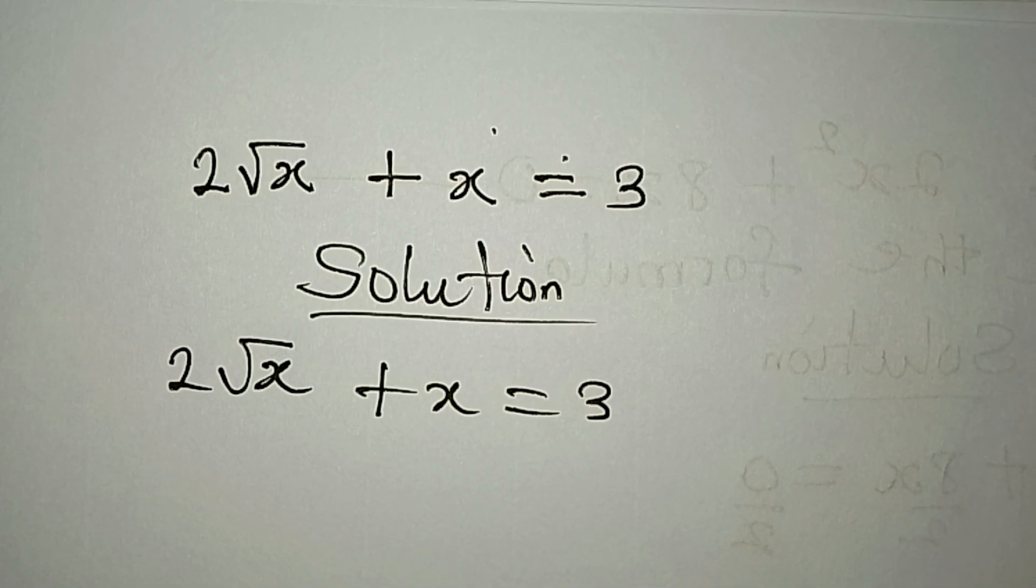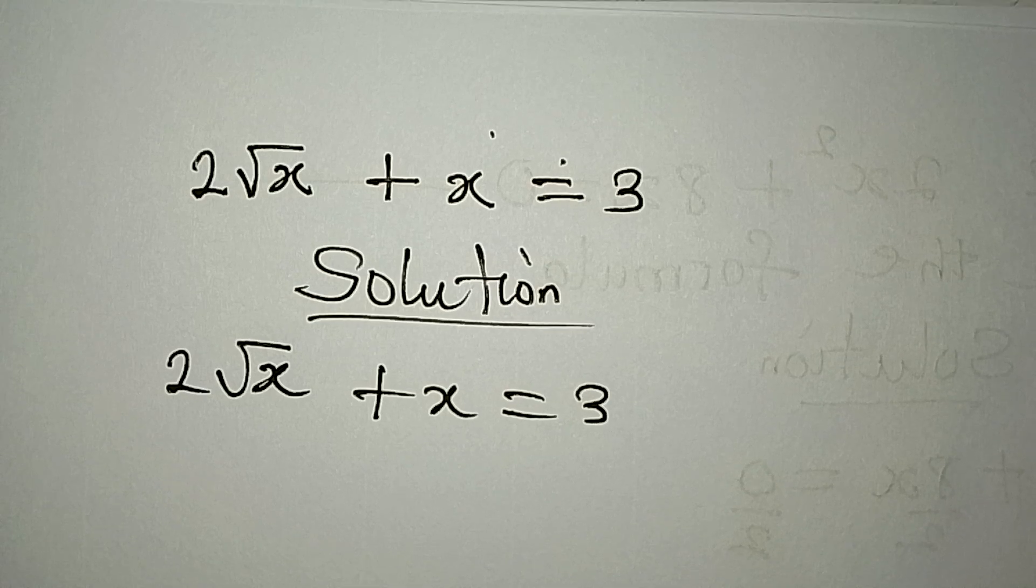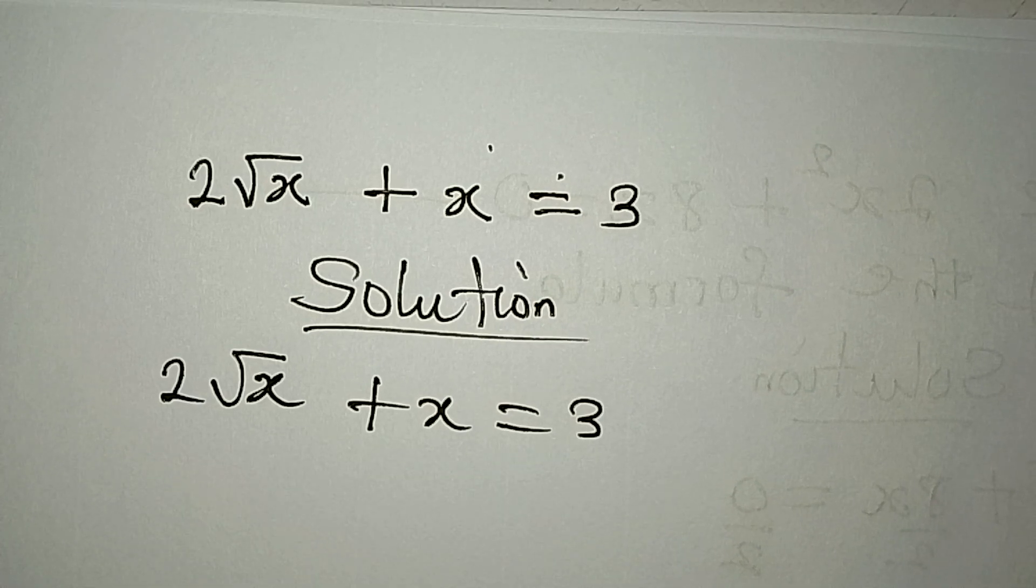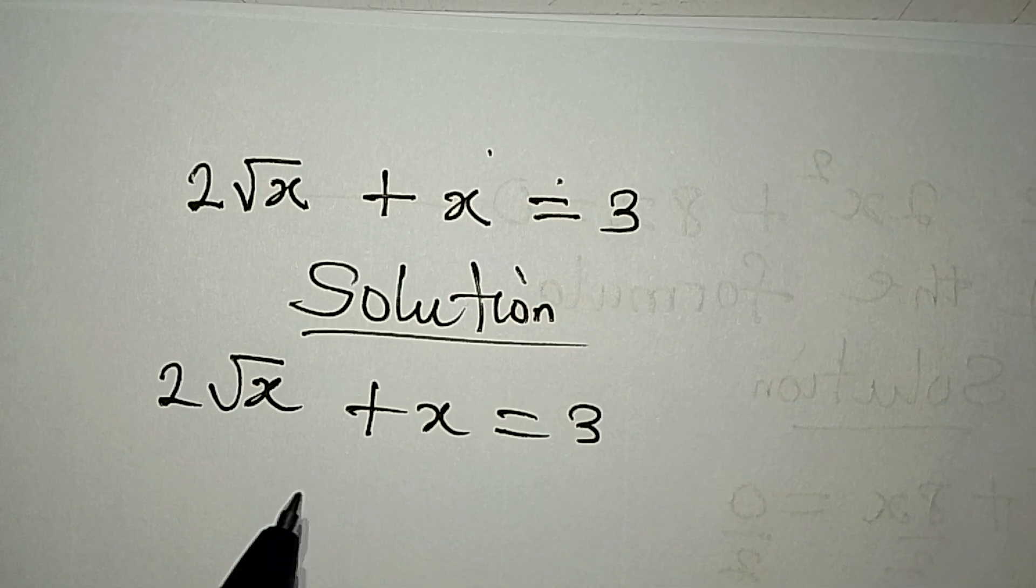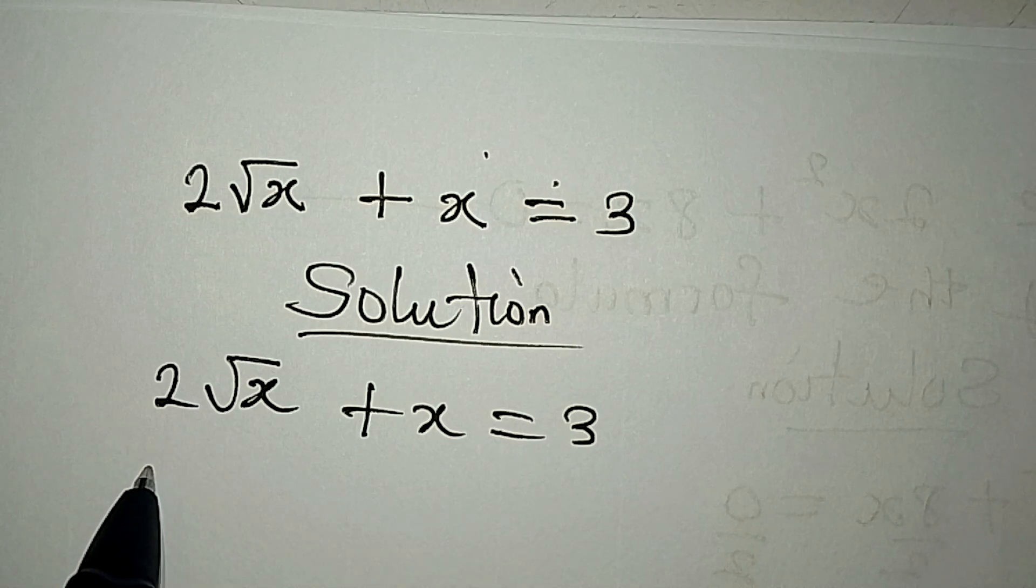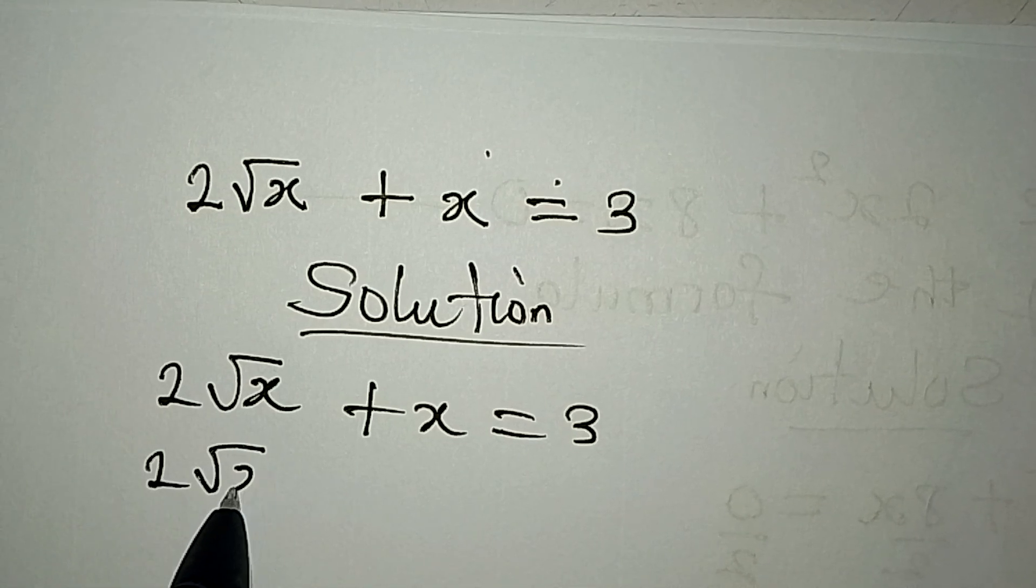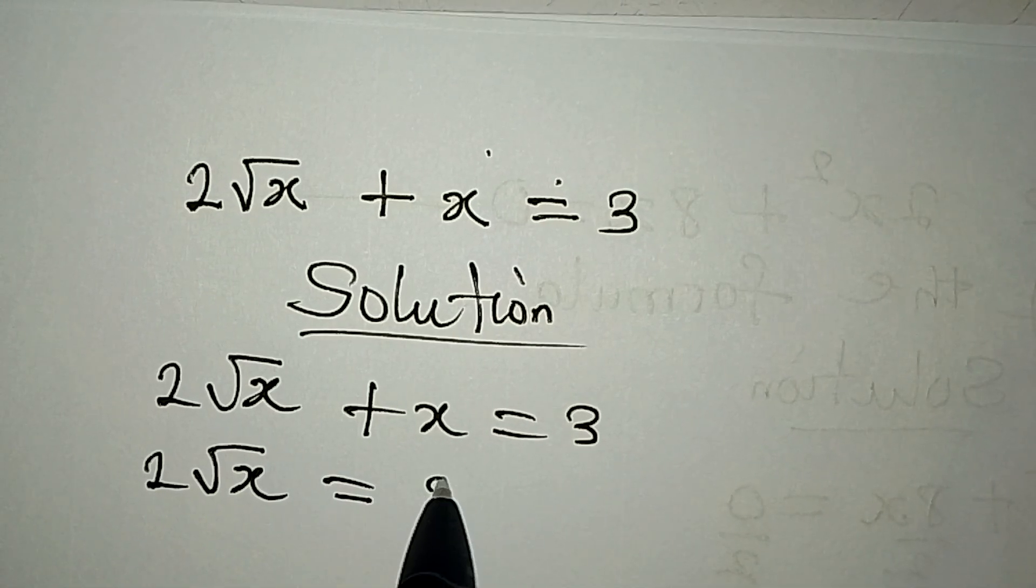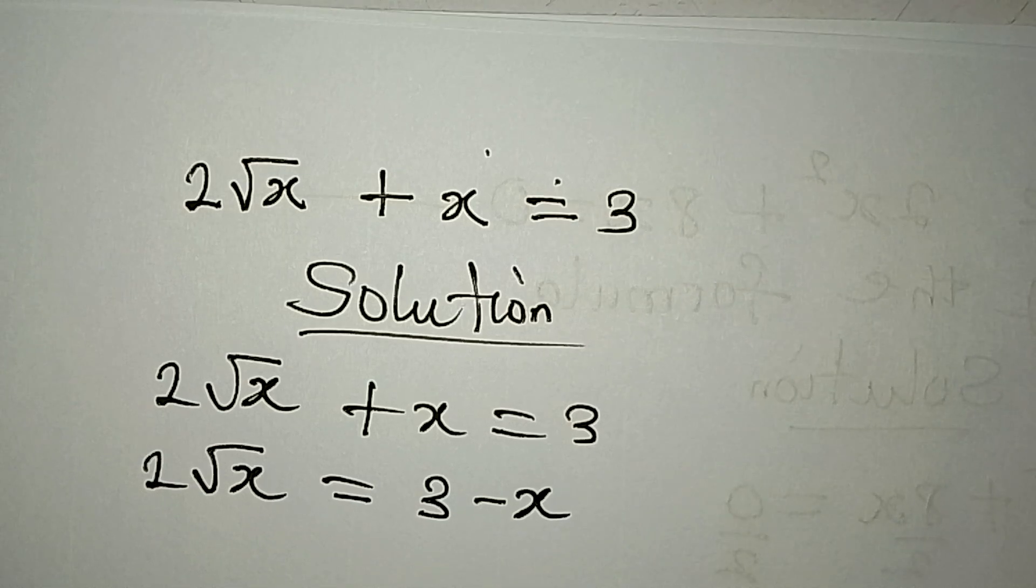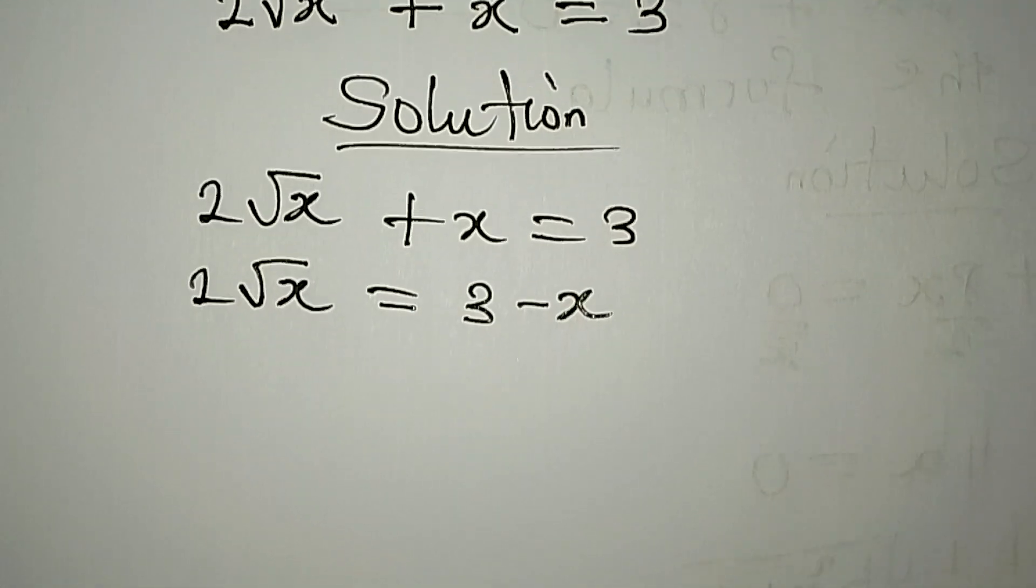The first thing we need to do is make the square root term the subject, so we have 2√x = 3 - x.